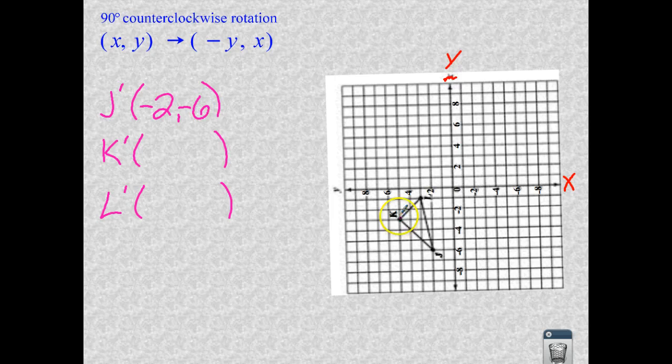The k prime, which is over here, negative 1, 2, 3, 4, 5, and then negative 3. And the l will go 1, 2, 3, and then negative 1.